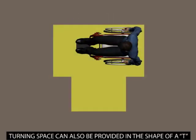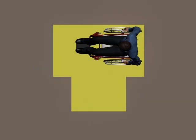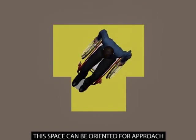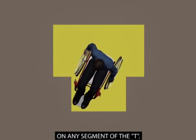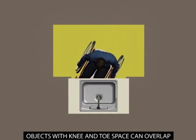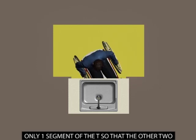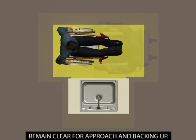Turning space can also be provided in the shape of a T that is at least 60 inches by 60 inches overall with segments at least 36 inches wide. This space can be oriented for approach on any segment of the T. Objects with knee and toe space can overlap only one segment of the T so that the other two remain clear for approach and backing up.